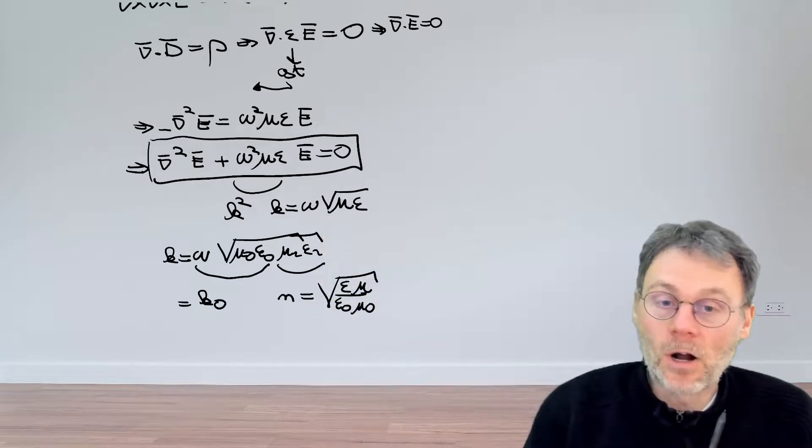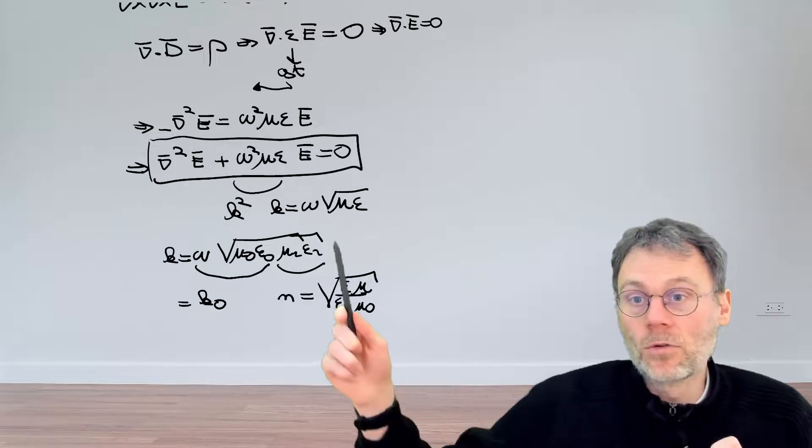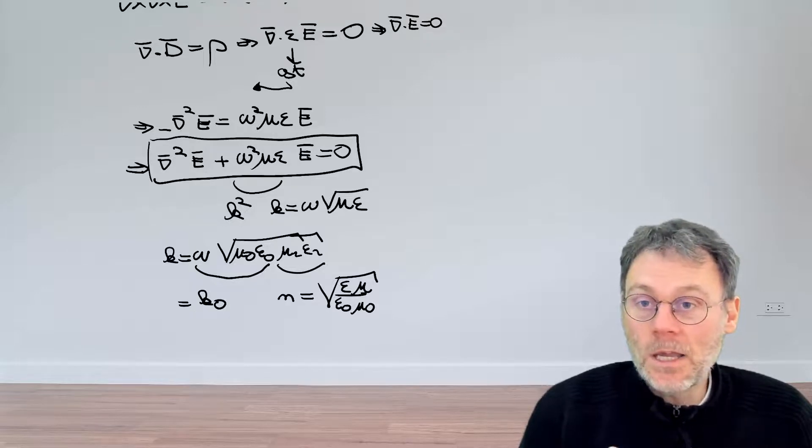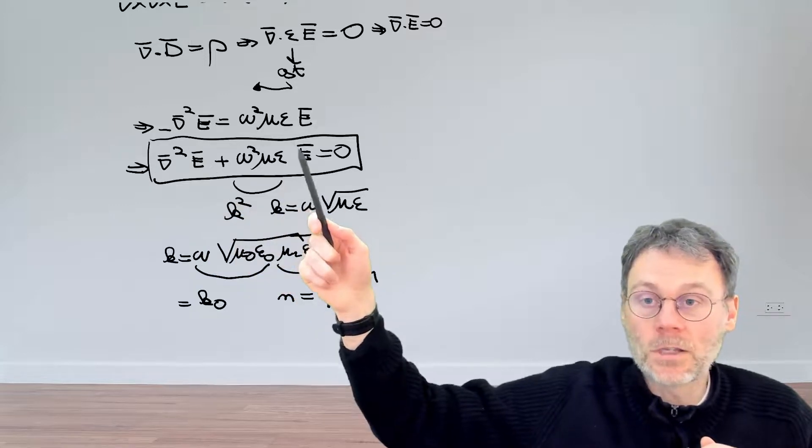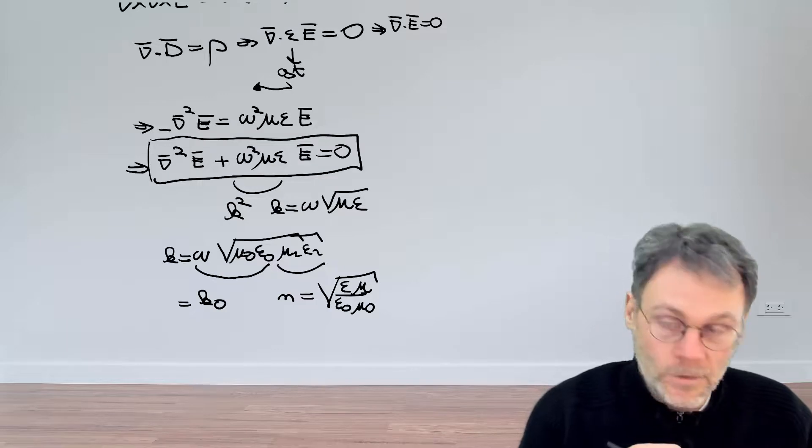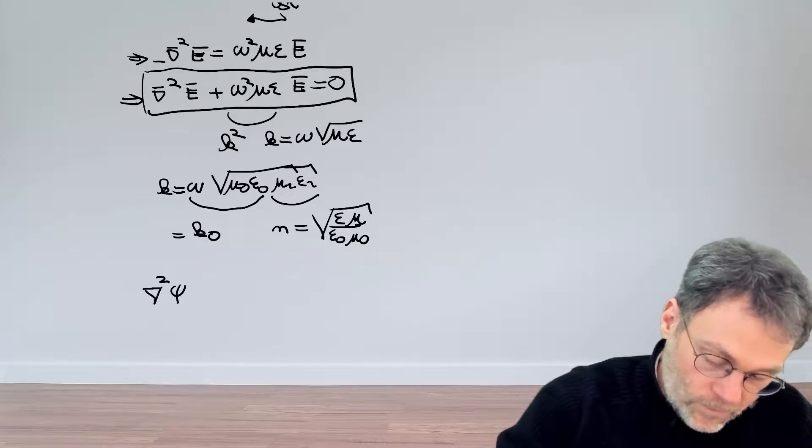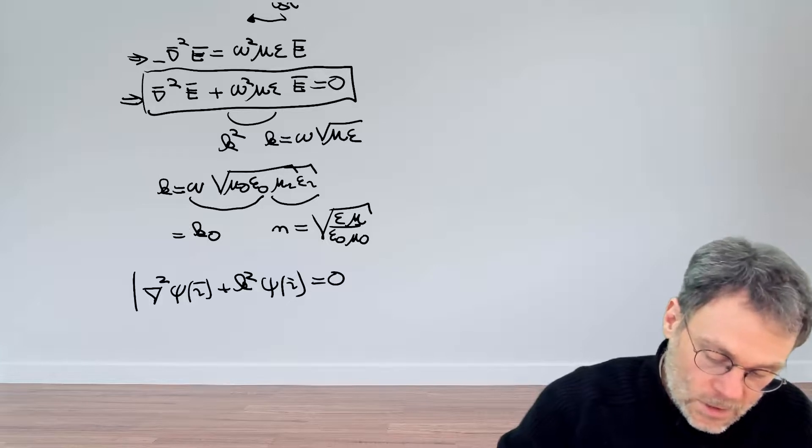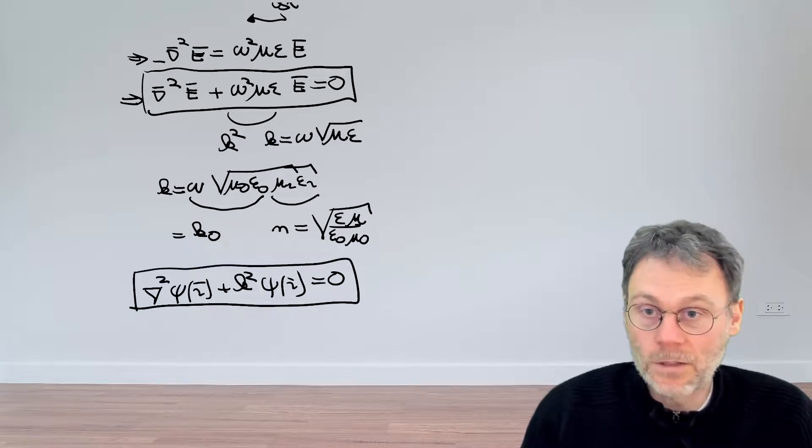But the important part is that we have our vectorial Helmholtz equation for the electric field. Now you can easily show in an exercise that you can also end up with a similar equation, but then for the magnetic field. And that also means that basically each Cartesian component of either E or H will satisfy a scalar version of the Helmholtz equation. Because the Laplacian of a vector is basically another vector consisting of the Laplacian of each of the different Cartesian components of that vector. So we can also write down a scalar version of that equation: the Laplacian of a scalar function psi plus k squared psi of r is equal to zero, where again psi is just any Cartesian component of the electric or the magnetic field.